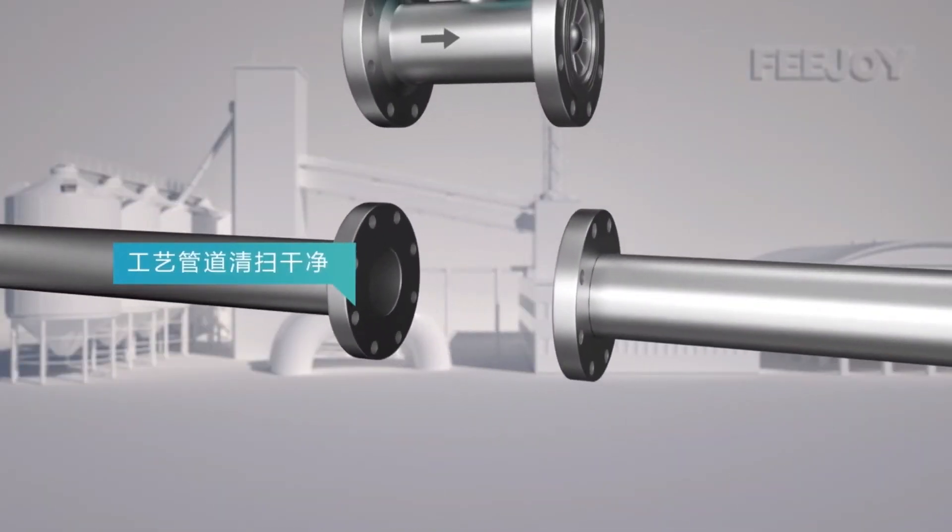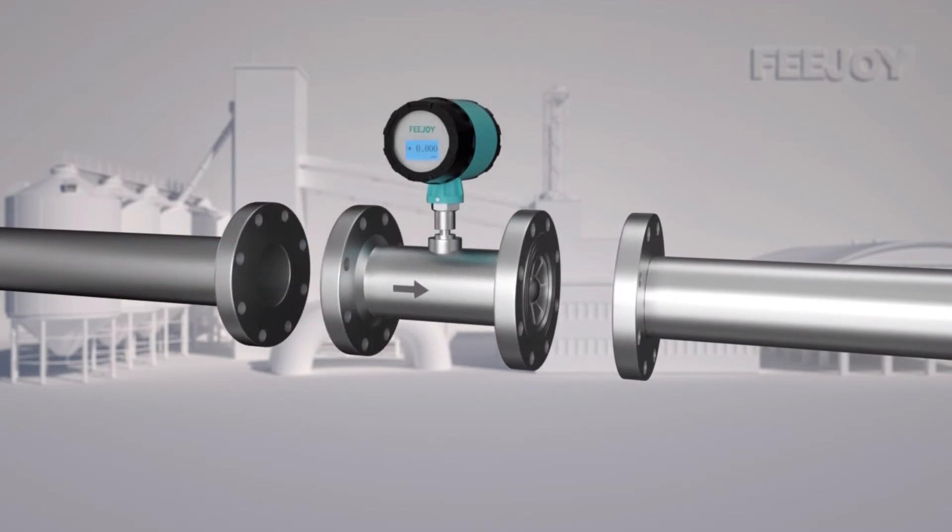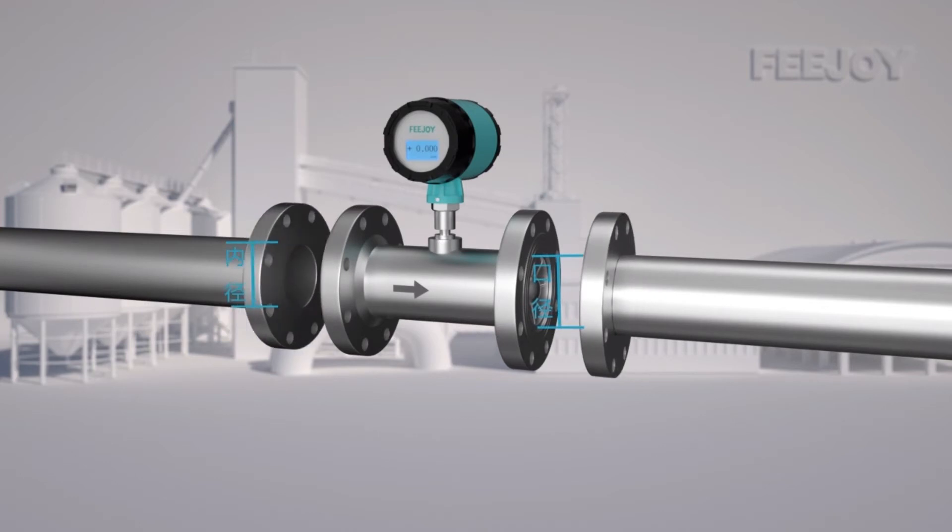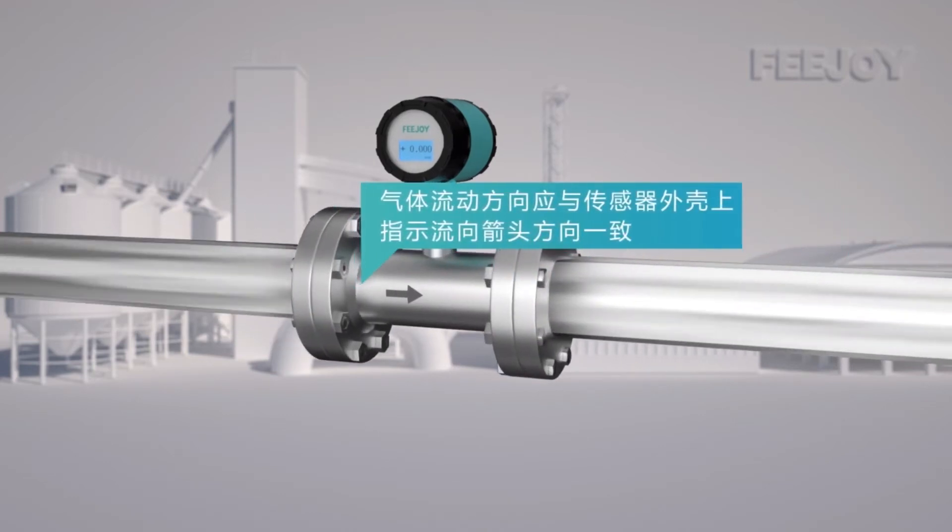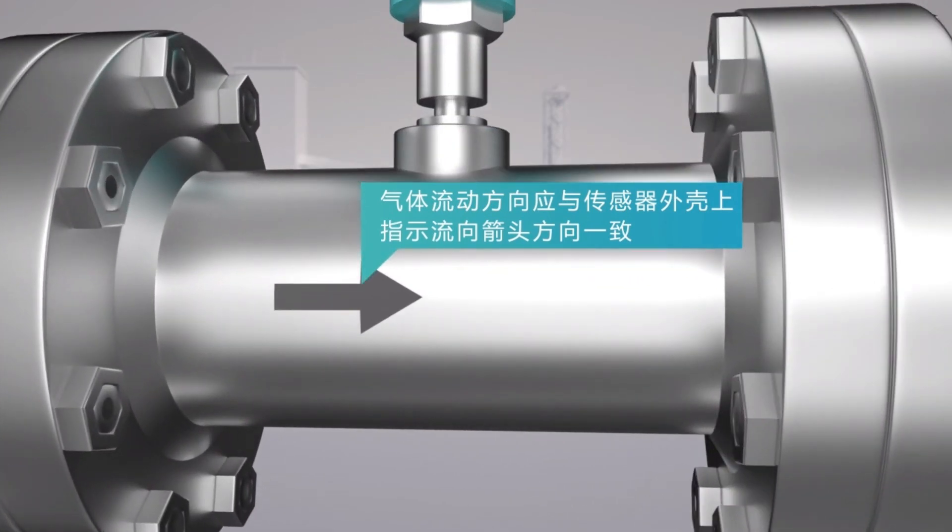The inner diameter of the pipe before and after the turbine flow meter is connected shall be the same as the diameter of the flow meter. The gas flow direction during installation shall be the same as the direction of the arrow indicating the flow direction on the sensor housing.